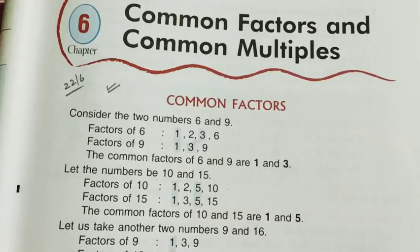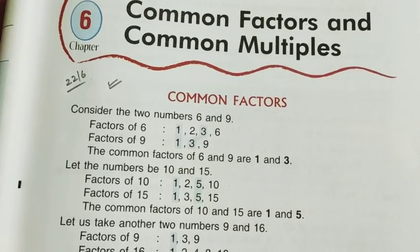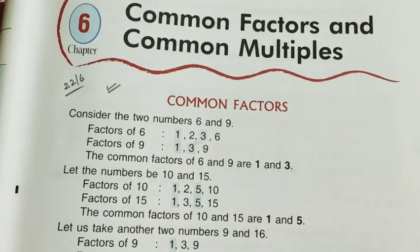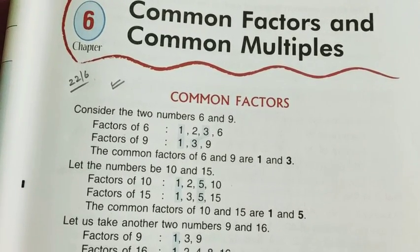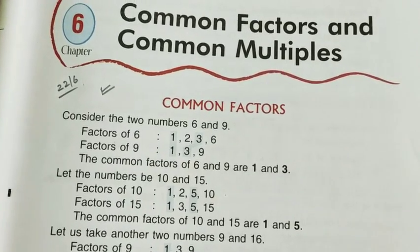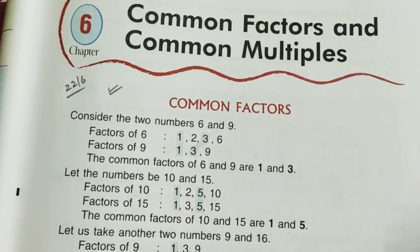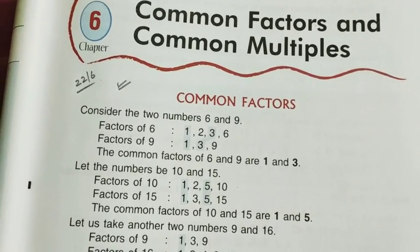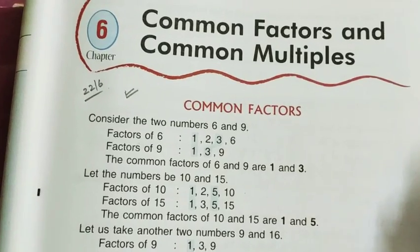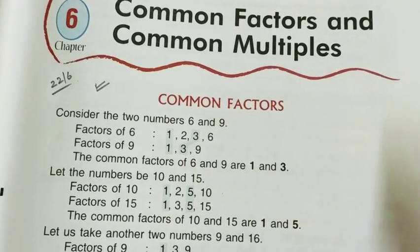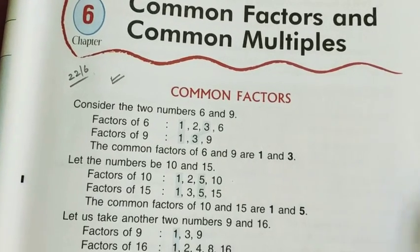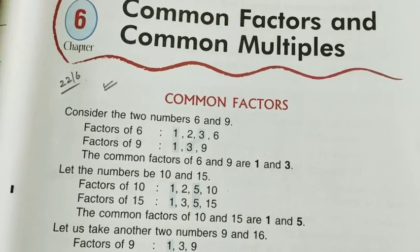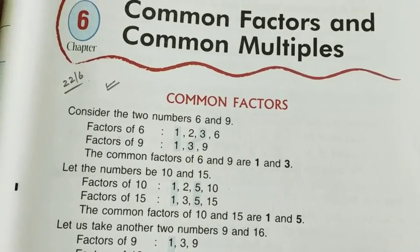In our previous chapter, that is Chapter 5, we have already learnt what are factors and what are multiples. Let's have a quick look at it before starting this chapter. What is a factor? If there is a given number, and some natural numbers perfectly divide that number, those numbers will be called the factors of the given number.